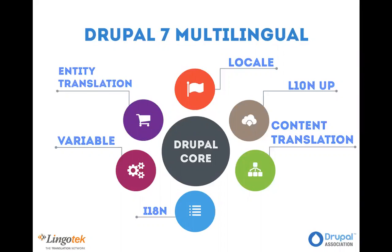One of the key things in the Drupal 7 Lingotech module is actually making you able to locate these components and making it easier to configure the modules in a way that makes sense. There's a lot of possible problems from this scenario — for example, both entity translation and content translation can translate nodes, and both entity translation and i18n translate taxonomy terms, creating duplication issues.